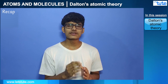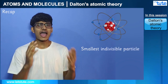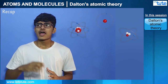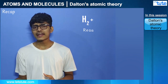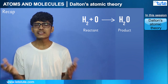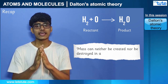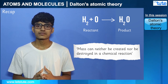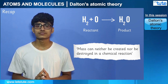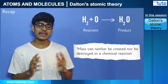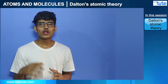Let's try to recap everything we have learnt till now. Atoms are the smallest indivisible particle and the building block of matter. Different elements combine together to form new compounds. The reactant and product, their masses, are equal — mass can neither be created nor be destroyed in a chemical reaction. In a chemical substance, the elements are combined in definite proportion by mass. But these laws were stated randomly.